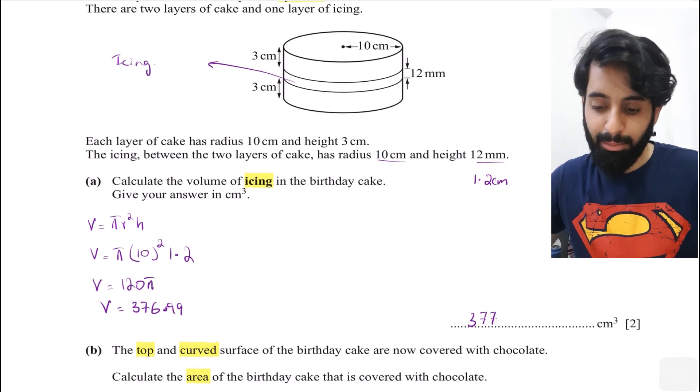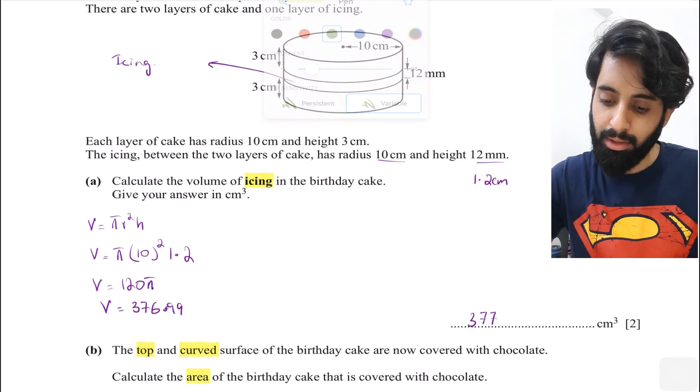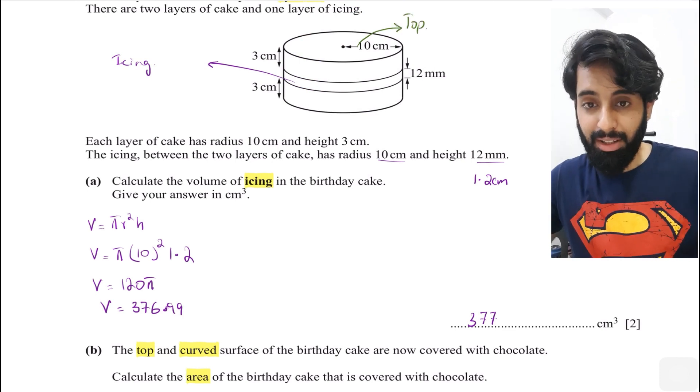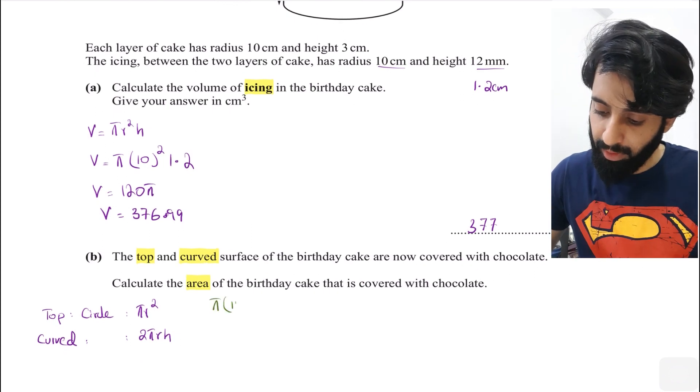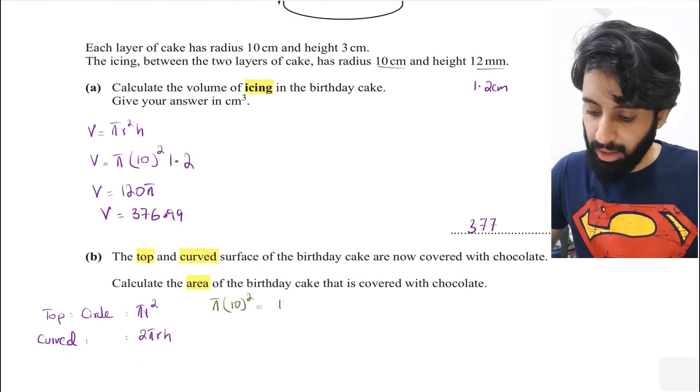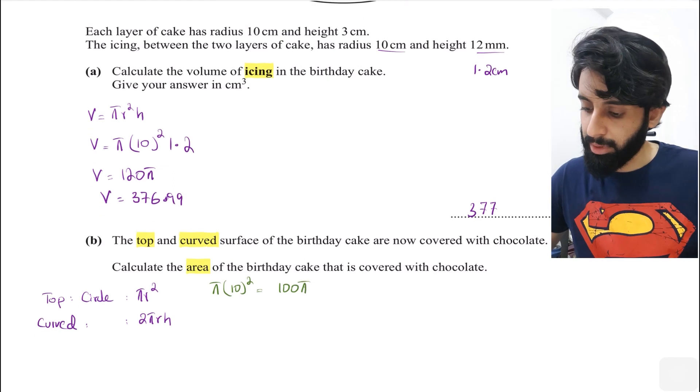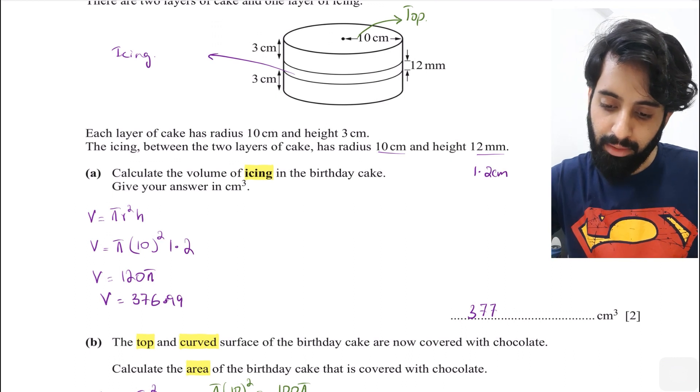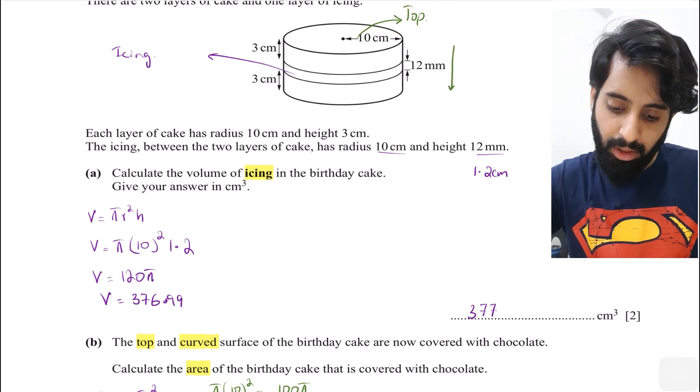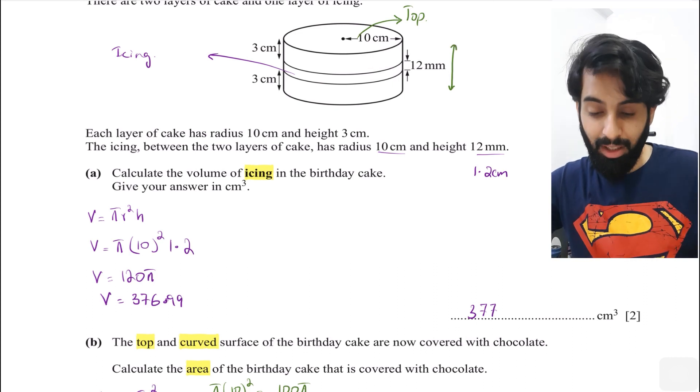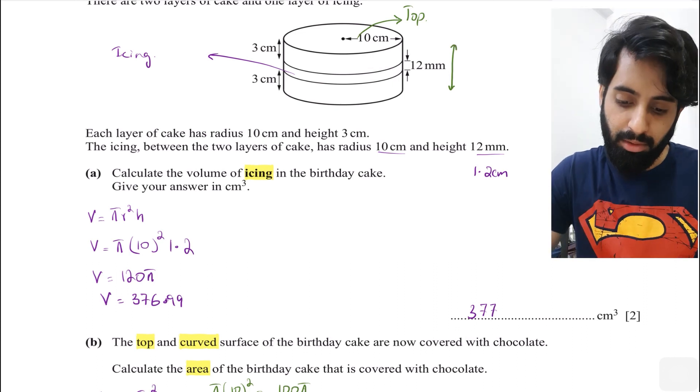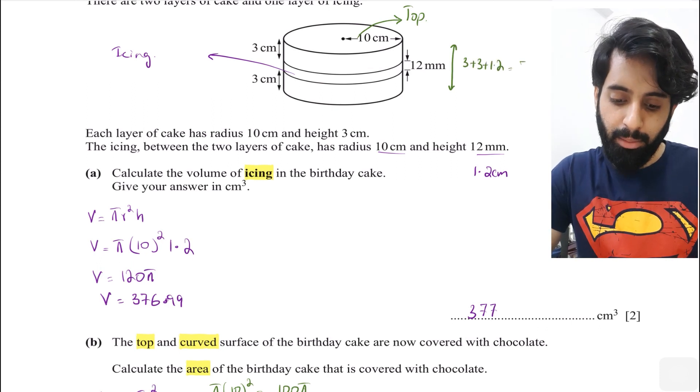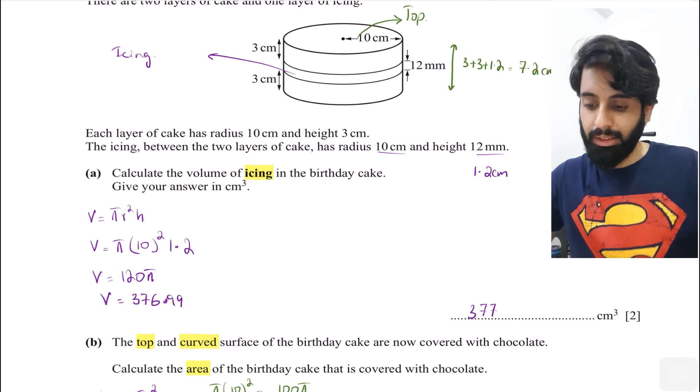For the top, the radius is 10, so π times 10 squared. I'll keep it in terms of π for now. For the curved surface area, you've got to take into account the entire height of the cake, which is 3 plus 3 plus 1.2. So that's going to be equal to 6 plus 1.2, which is 7.2. The height of the cake is 7.2 centimeters.